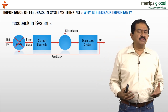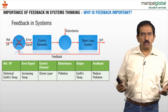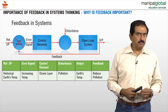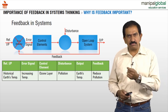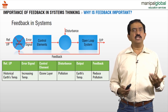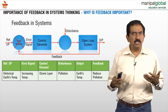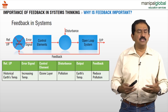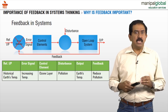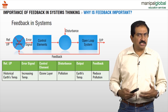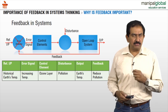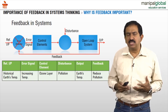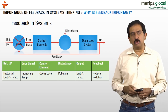An example here would be the earth's temperature — the topic of the day. We are talking about global warming. Let us look at how Mother Earth could be thought of as a system and what the feedback mechanism is. The reference input signal is the historical average temperature of the earth over many decades. The error signal is the increasing temperature. The control element is the ozone layer, which prevents further warming of the atmosphere. The disturbance is pollution created by mankind and natural events. This disturbance in turn impacts the earth's temperature, and the only feedback we can act upon to manage this is to reduce the pollution. Therefore this can be thought of as a closed loop system.